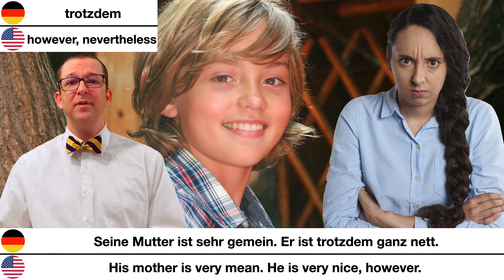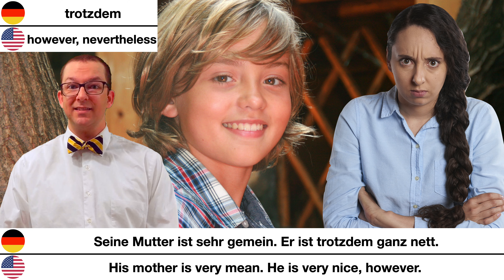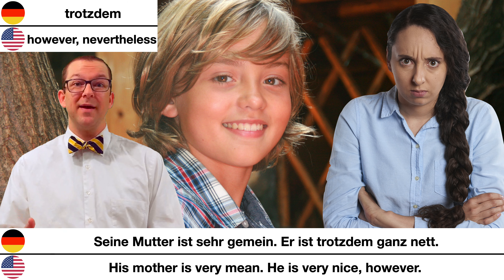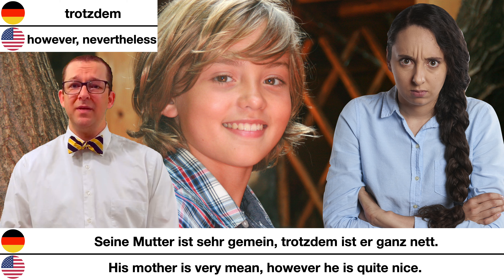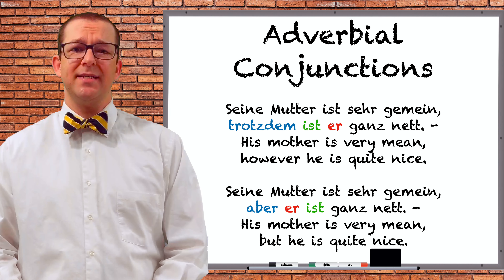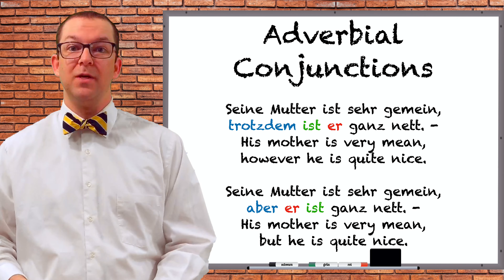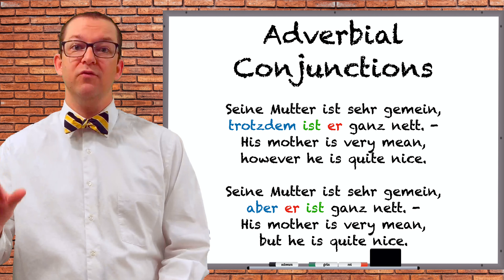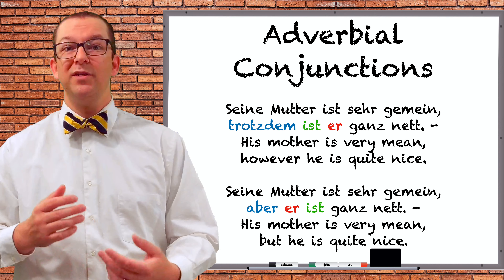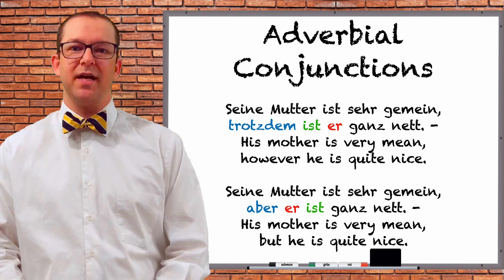In this sentence, trotzdem simply modifies the other adverbs, ganz and nett — showing the manner in which he is being nice. This can be combined into two sentences using trotzdem as a conjunction: Seine Mutter ist sehr gemein, trotzdem ist er ganz nett. His mother is very mean; however, he is quite nice. The thing you need to pay attention to is the word order after the conjunction.